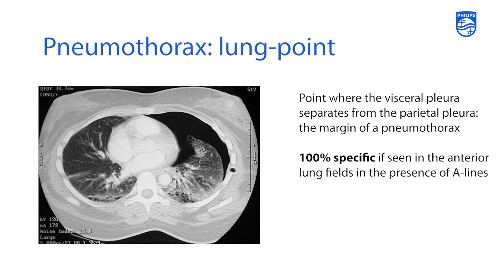Another finding often seen in a patient with a pneumothorax is called a lung point. The lung point is the point where the visceral pleura separates from the parietal pleura — it's the margin of a pneumothorax. As delineated by the black arrow on screen, that's the point where a portion of lung is making contact with the chest wall, and then suddenly the pneumothorax in the anterior portion causes a separation between the visceral and parietal pleura. This finding, if seen in the anterior lung field in the presence of A-lines, is 100% specific for a pneumothorax.